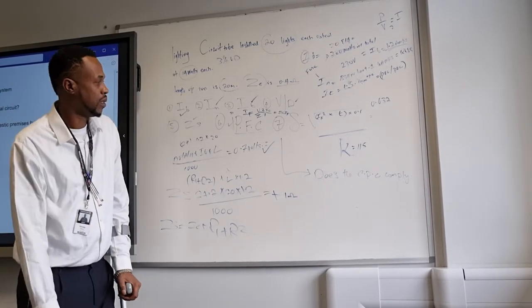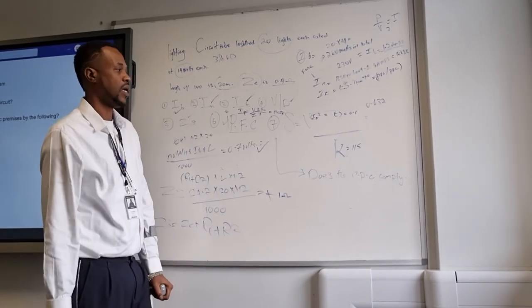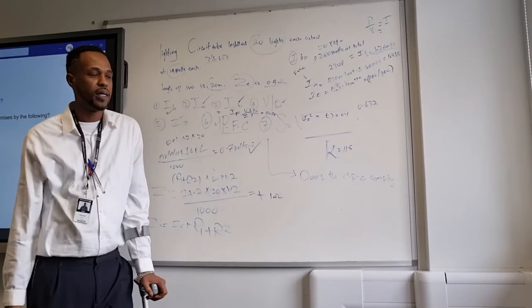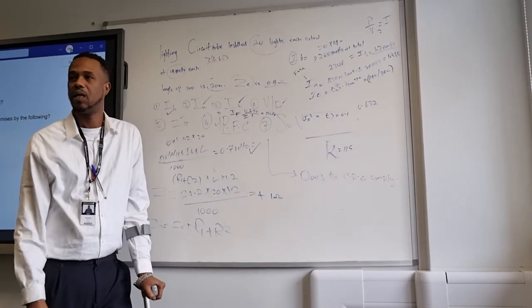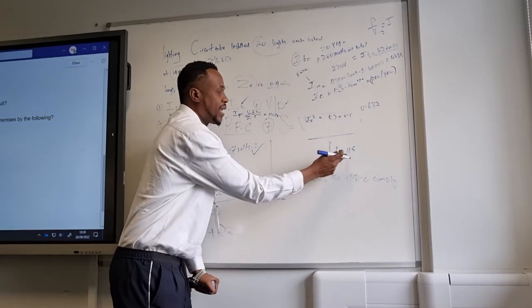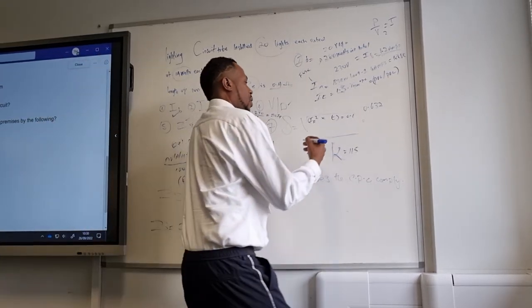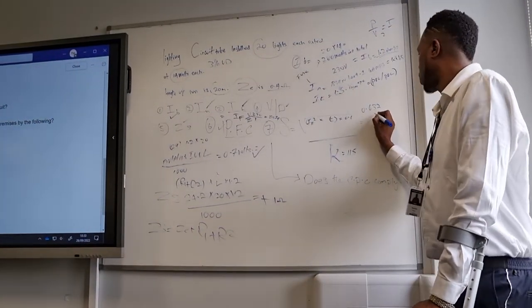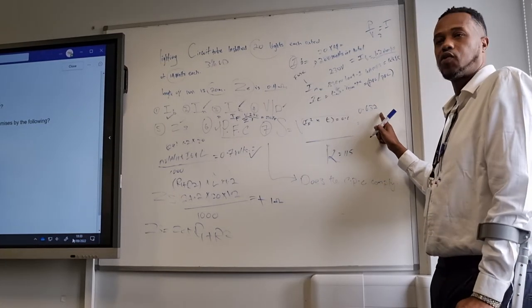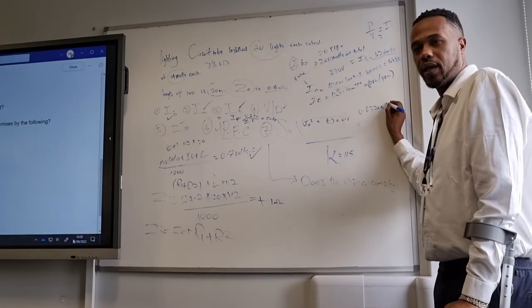Once you've got that, you then need to do the adiabatic equation. S equals square root of IF squared times T, open bracket, close bracket, divided by K, which is 115. And once we did that, we end up with 0.632. And what's that measured in? Millimeter squared.